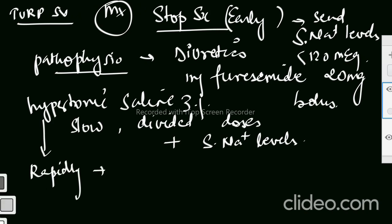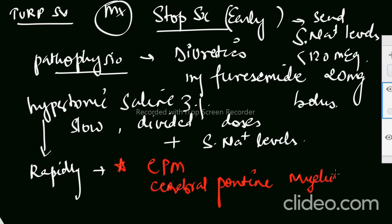It can cause CPM, that is central pontine myelinolysis. So it is said that around 200 ml of 3% normal saline you can give to the patient. Also, alternatively we can give mannitol. And mannitol 15%.